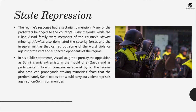Alawites had also dominated security forces and the irregular militias that carried out some of the worst violence against protesters and suspected opponents of the regime. In his public statements, Assad sought to portray the opposition as Sunni Islamic extremists in the mode of Al-Qaeda and as participants in foreign conspiracies against Syria. The regime also produced propaganda stoking minorities' fear that the predominantly Sunni opposition would carry out violent reprisals against non-Sunni communities.